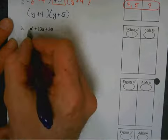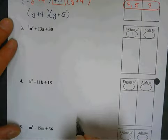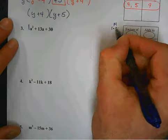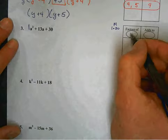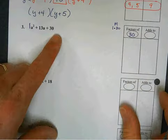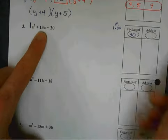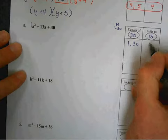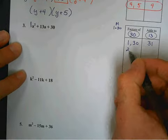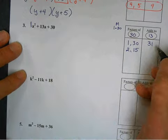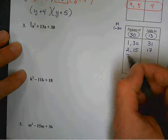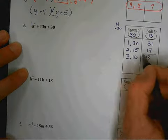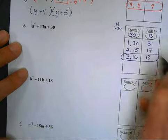All right? The number in front of the a squared is a 1. So, multiply 1 times 30. 1 times 30 is? Obviously 30. Look at the problem. What's the middle term? So, it adds to 13. And here we go. 1 times 30 is 30. That's 31. Didn't work. 2 times 15 is 30. Adds to 17. Didn't work. 3 times 10 is 30. Adds to? 13. That works. So, we multiplied. We added. And now we choose.